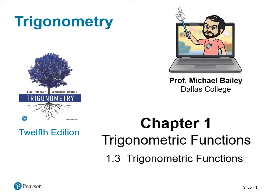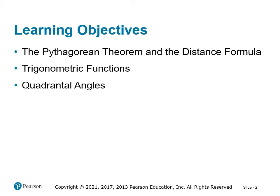Welcome to the next lecture in trigonometry. We are focused on section 1.3, trigonometric functions. Today we're going to look at the Pythagorean theorem and the distance formula and how that can help us define specifically the trigonometric functions and then values of trigonometric functions as it pertains to quadrantal angles that we talked about in the earlier sections.